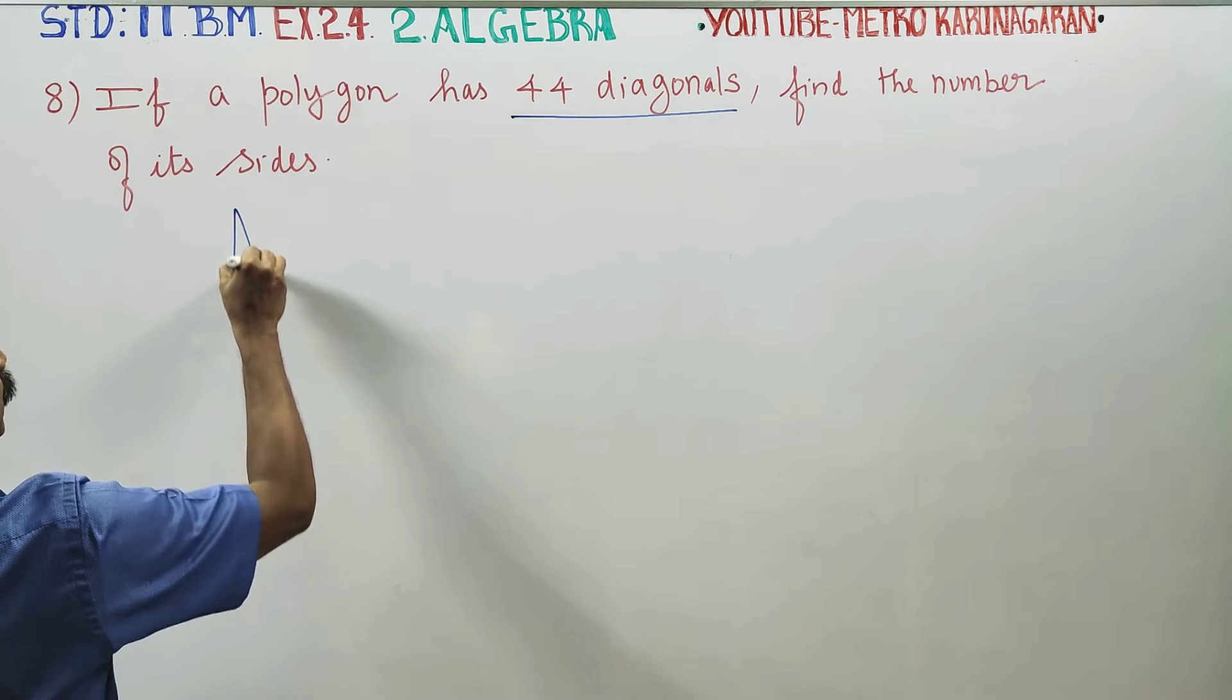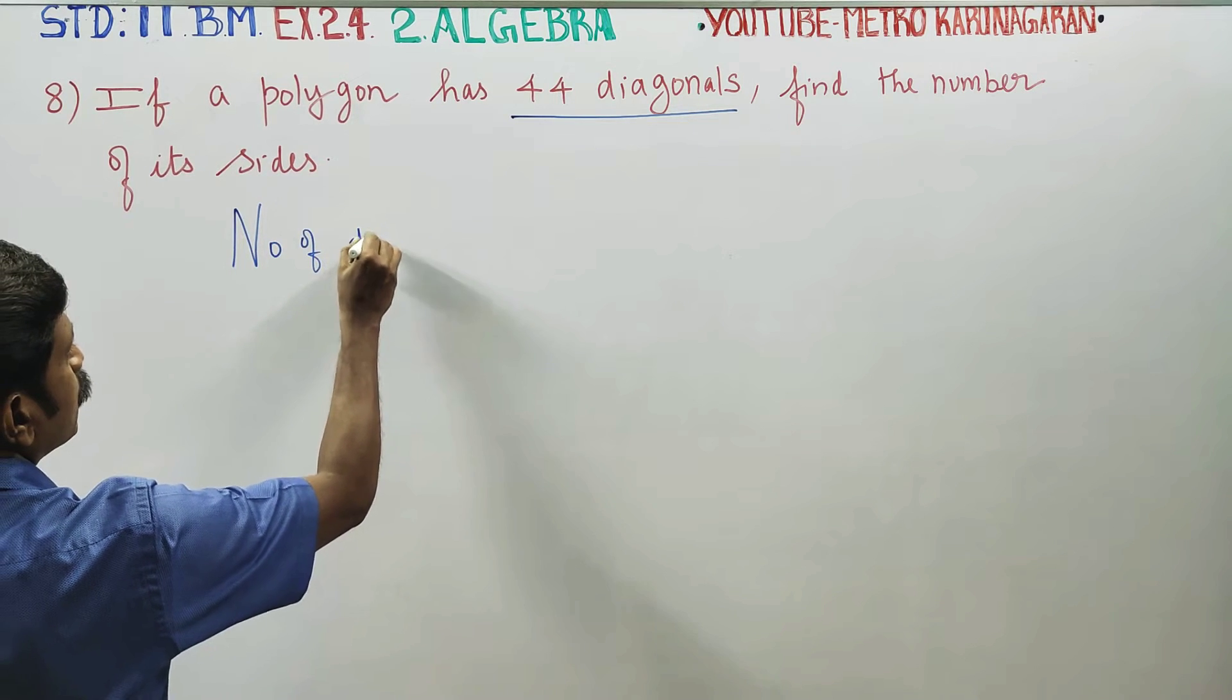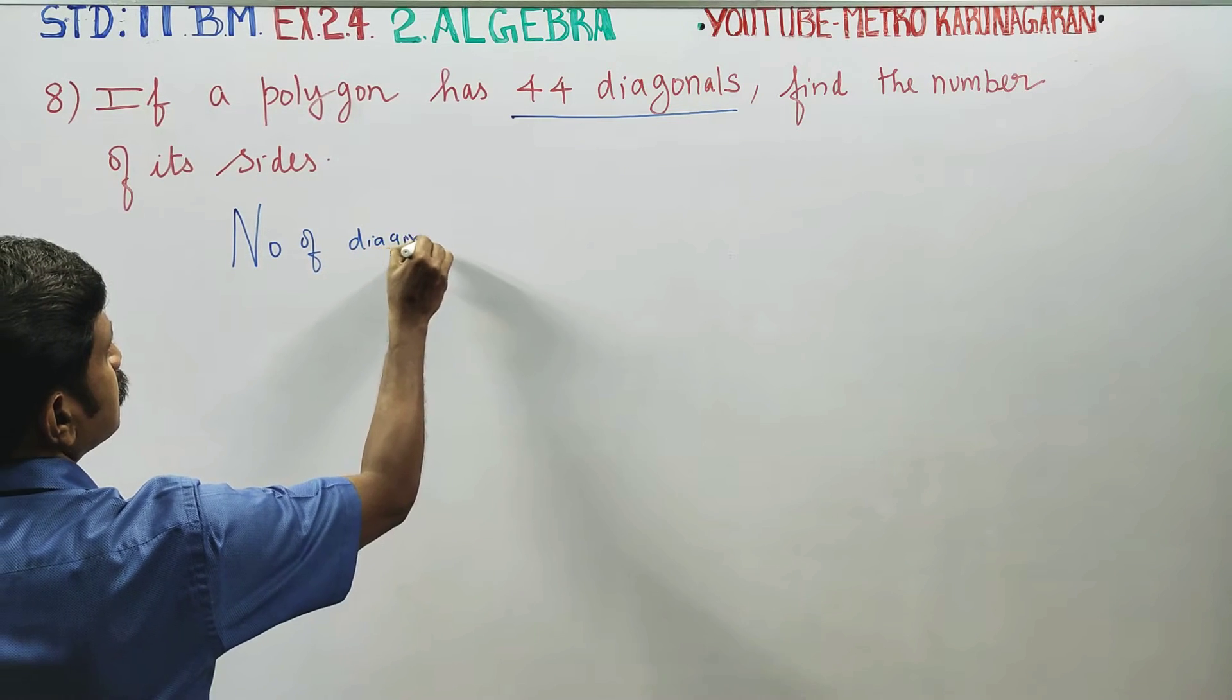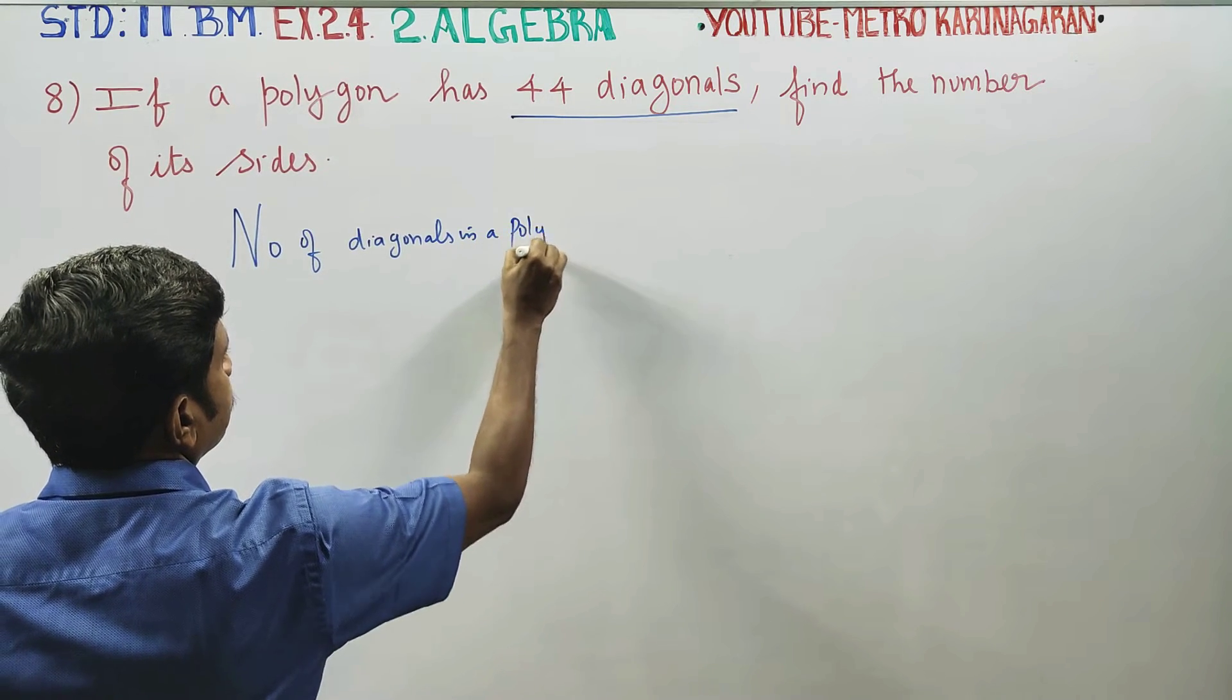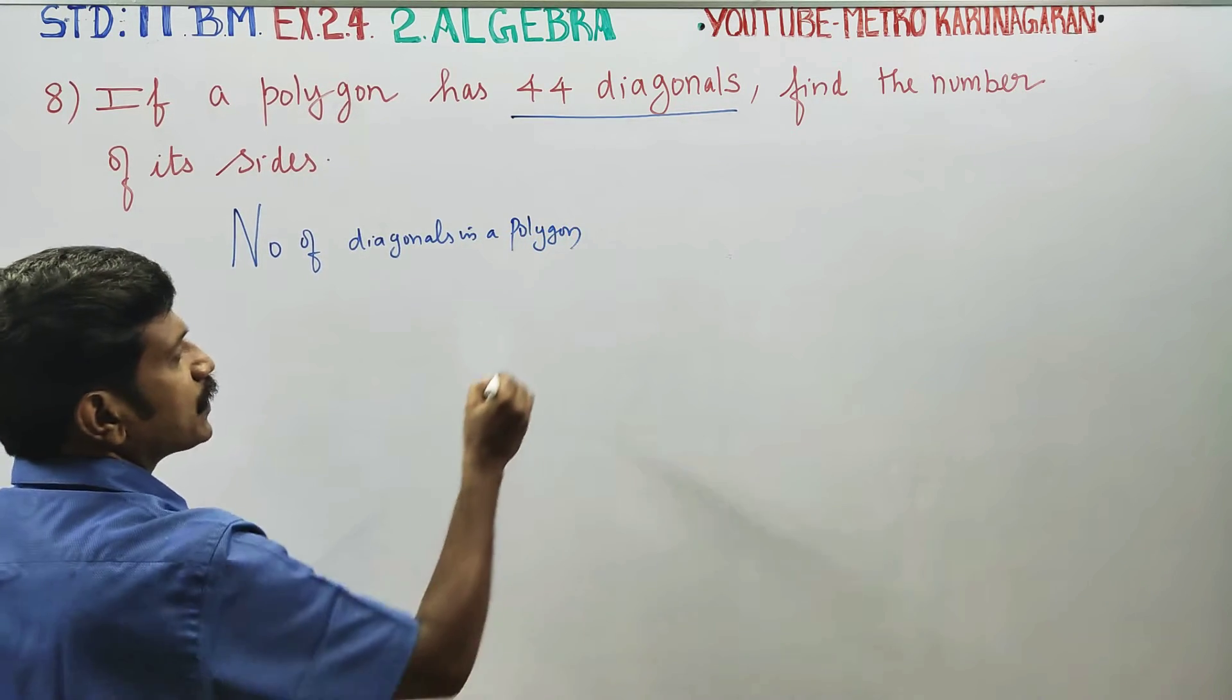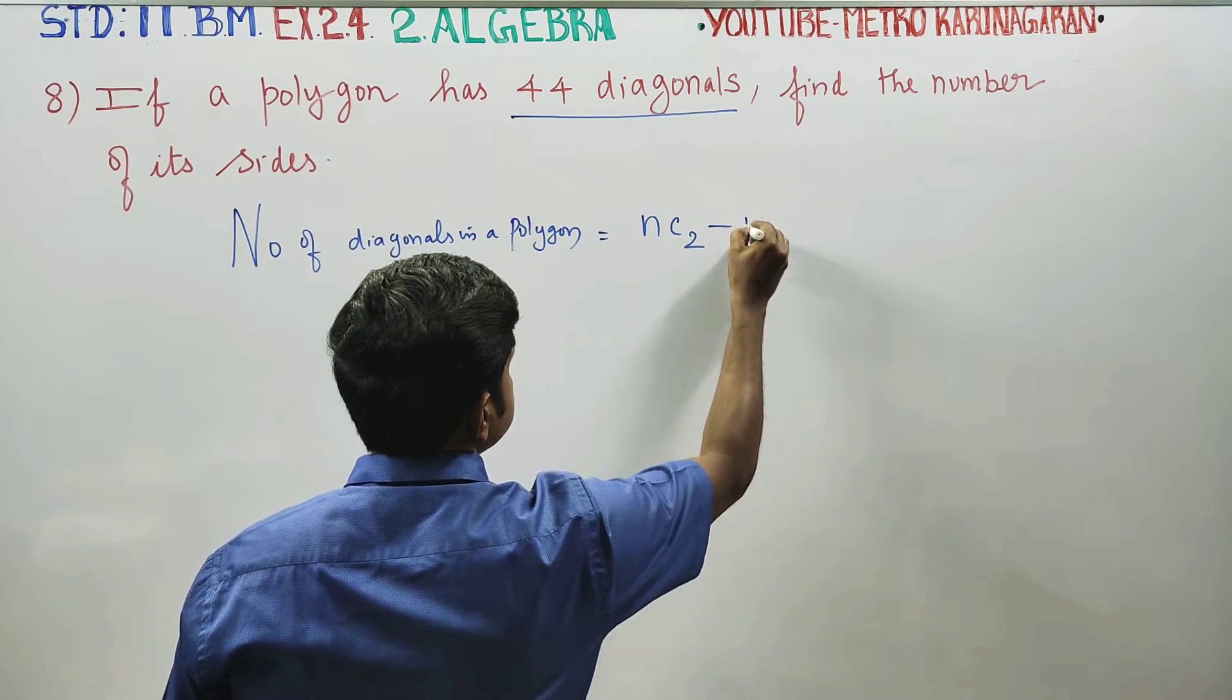In the sum, we use the formula: number of diagonals in a polygon is nC2 minus n.